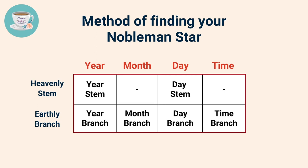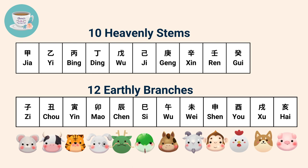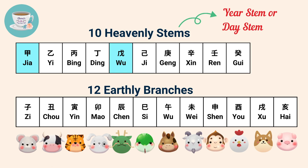As we know, there are 10 heavenly stems and 12 earthly branches, and each of the branches represents a zodiac animal sign. For example, if your year stem or day stem is Jia or Wu, the compatible earthly branches are Chou and Wei. Therefore, Chou and Wei are your Nobleman stars.